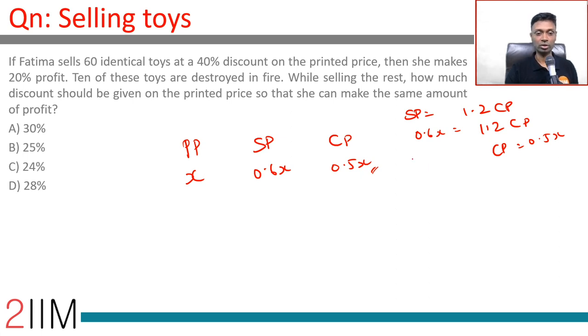If she sells 60 identical toys, now she doesn't get to sell 60, she sells only 50. So her total cost price is 0.5x times 60, which is 30x.